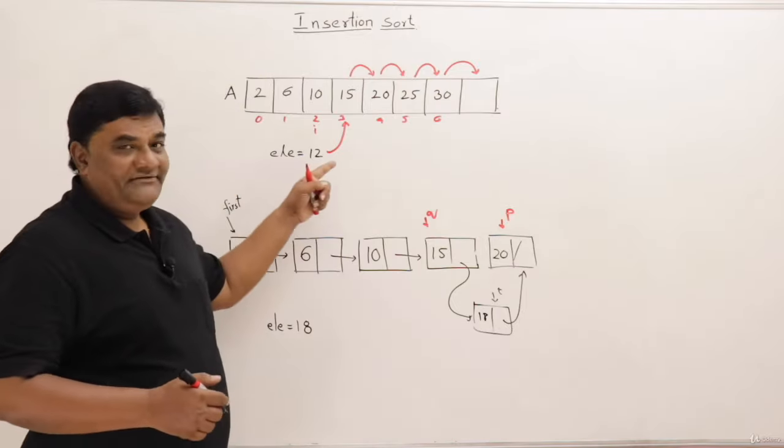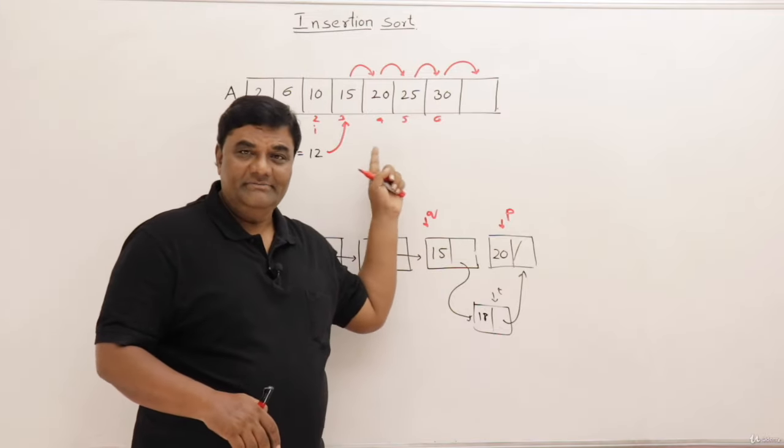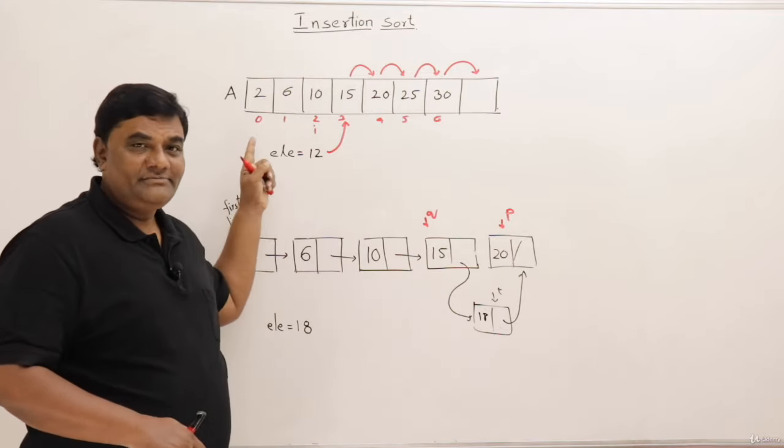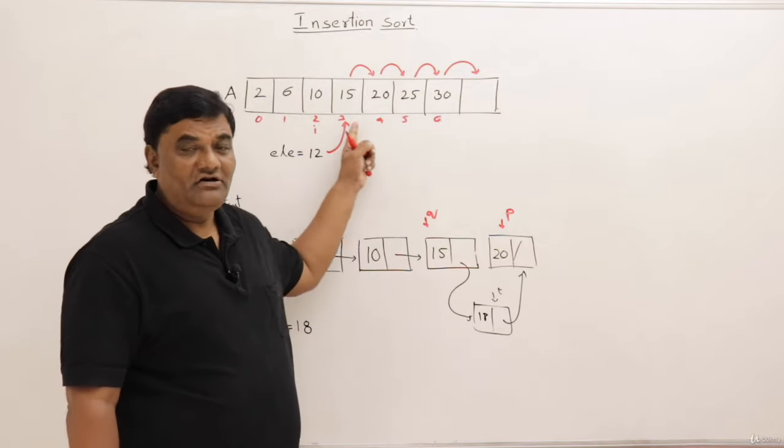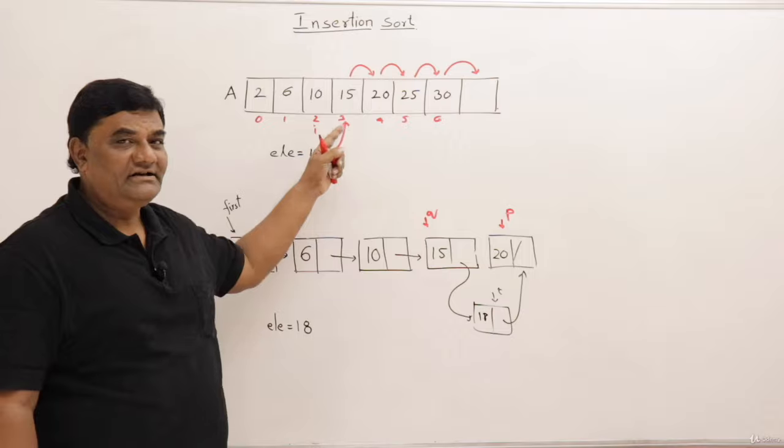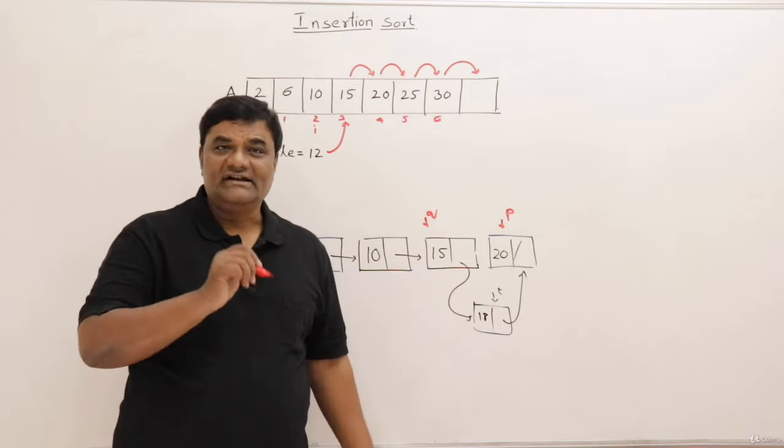Whereas in an array we don't have to find the position. Simply shift the elements and once you get a smaller element then insert. And once you have finished shifting all larger elements then insert at a free space.